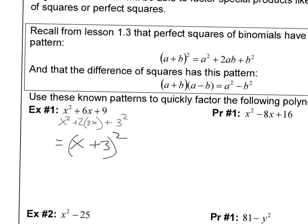And if you want to factor this the old-fashioned way with the star method, you could do that. You could put the 9 up here, the 6 down here, and ask two things that multiply to 9 and add to 6. And sure enough, it's 3 and 3. So that would mean it's (x+3)(x+3).